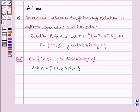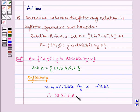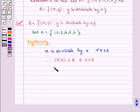Now let's check for reflexivity. x is divisible by x for all x belongs to A. Therefore (x,x) belongs to R for all x belongs to A. Therefore R is reflexive.